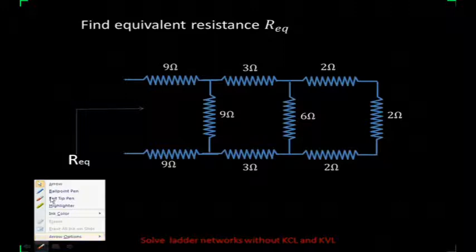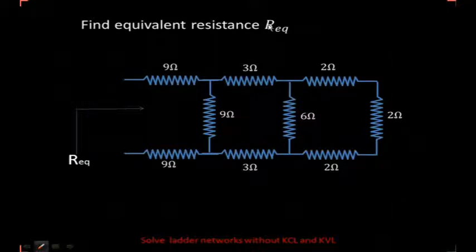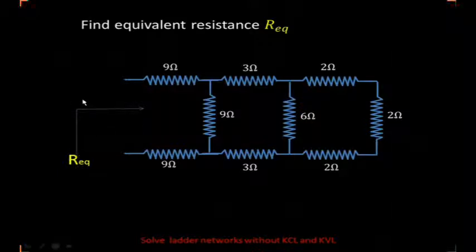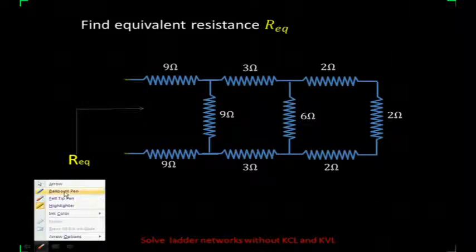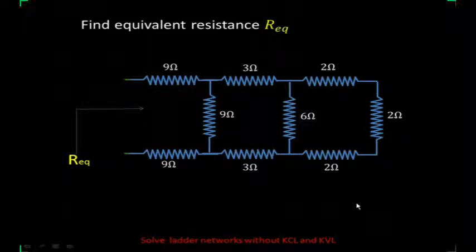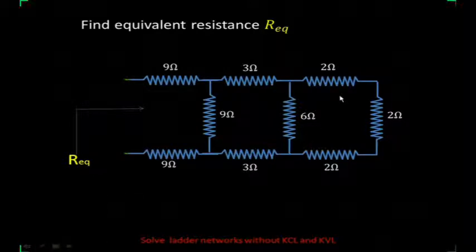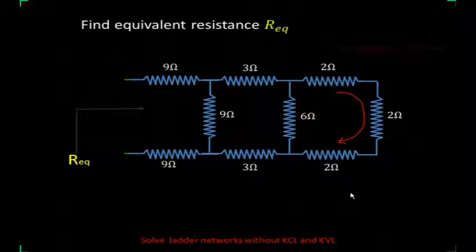This is the first question. Here we have to find out the equivalent resistance — the equivalent resistance when we are looking from this point. We have to find the equivalent resistance between these two points. These three resistances are in series, and the series combination value is 2 plus 2 plus 2, that is 6 ohms.